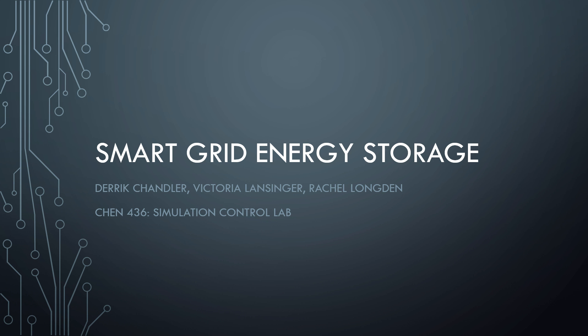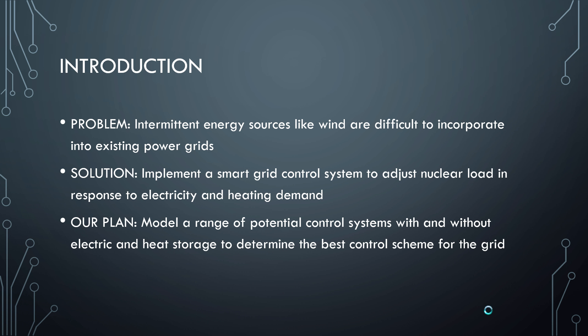As the demand for greener power in the world is increasing, there's more demand for wind power. Wind power is naturally intermittent, which presents difficulty when trying to incorporate it into a power grid. We had the opportunity to work as a team to incorporate wind power generation with a nuclear power plant to minimize the amount of electrical and heat oversupply. We did this by trying a variety of systems that incorporated batteries, electrical batteries, heat storage, and used PID controllers.